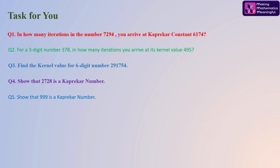Now for your tasks: (1) In how many iterations does the number 7294 reach Kaprekar's constant 6174? (2) For the three-digit number 378, in how many iterations do you arrive at its kernel value 495? (3) Find the kernel value for the six-digit number 291754. (4) Show that 2728 is a Kaprekar number. (5) Show that 999 is a Kaprekar number.